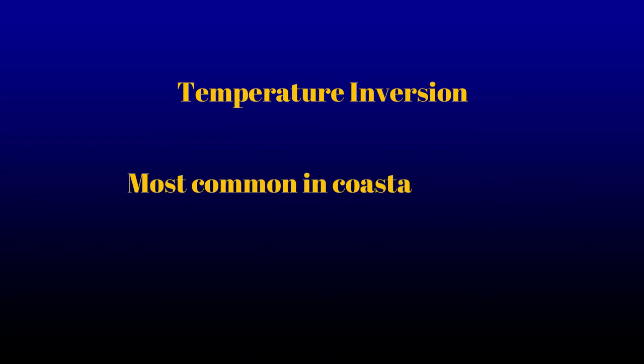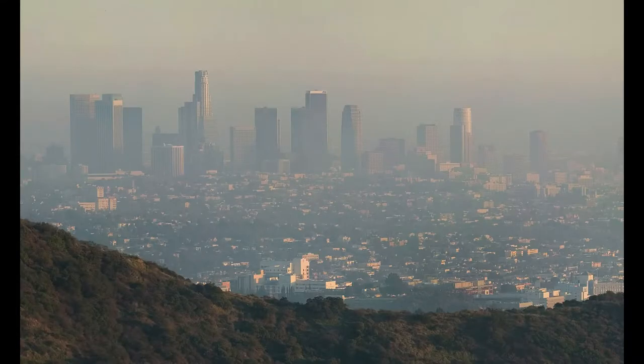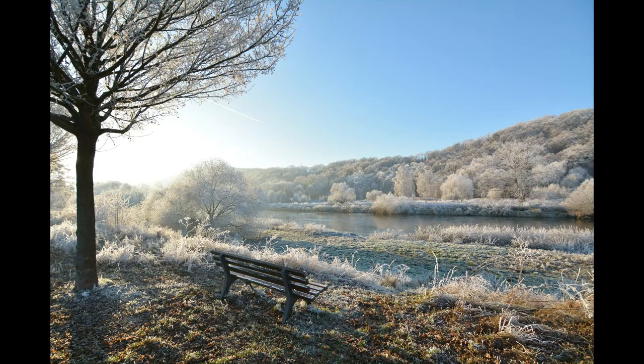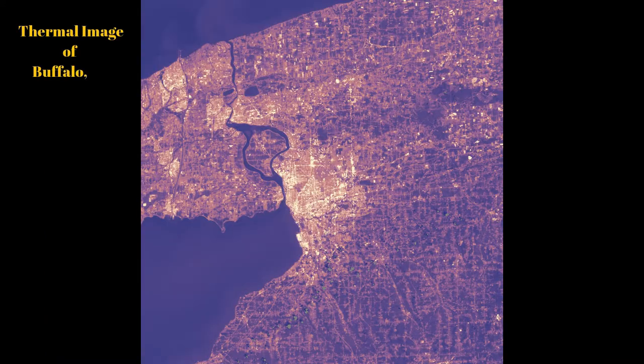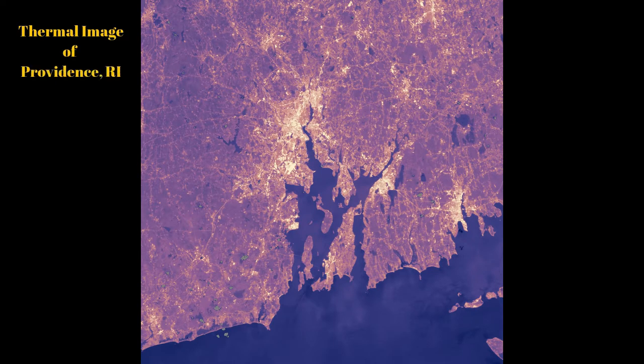Remember the environmental lapse rate where temperatures decrease with elevation? Well, sometimes it warms with increasing elevation. This is called a temperature inversion. They are most common with coastal areas. Smog in the Los Angeles basin or frost in other areas are examples of results from temperature inversions. Heat islands are a phenomenon created by urban land use. Large parking lots with black asphalt absorb a lot of solar insolation, creating very hot spots in that location.